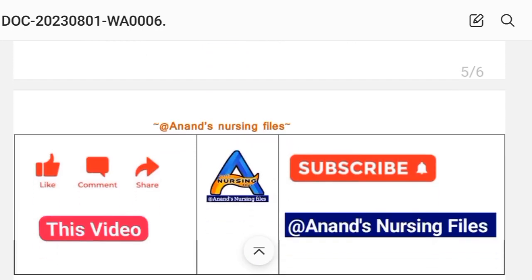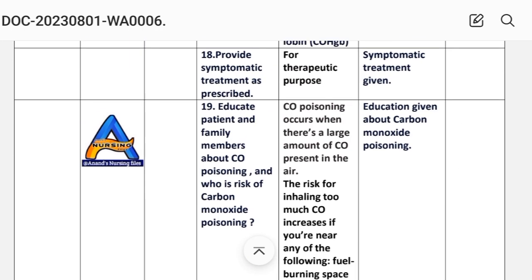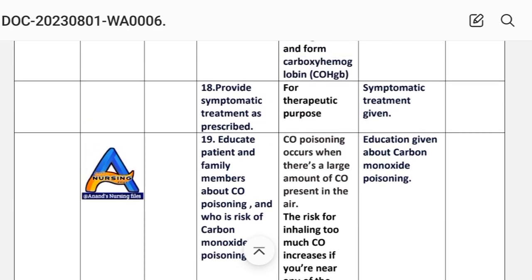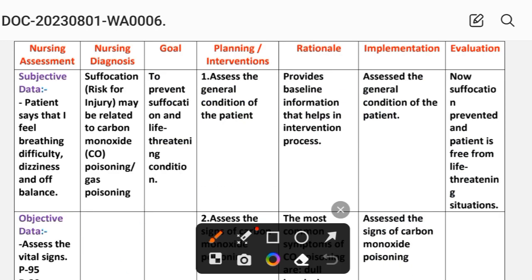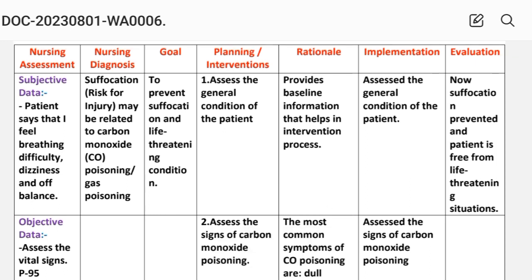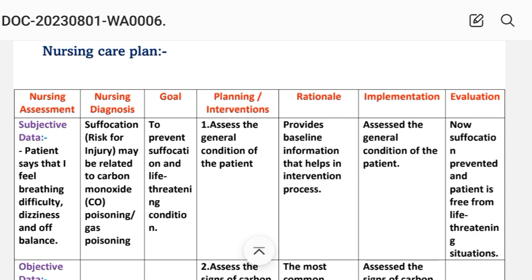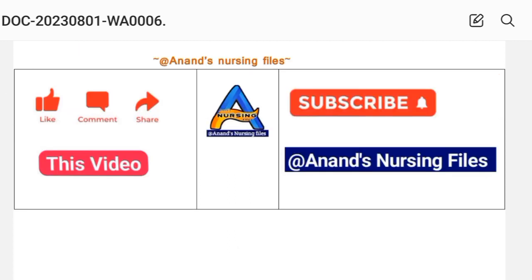After writing these interventions, we write the evaluation step. Evaluation: suffocation prevented and patient is free from life-threatening situations. This is how we complete the carbon monoxide poisoning nursing care plan.